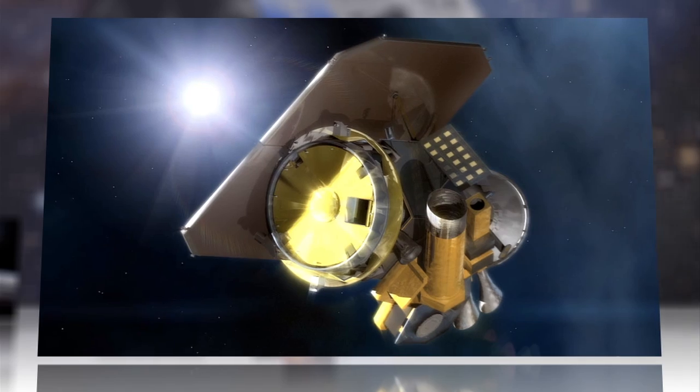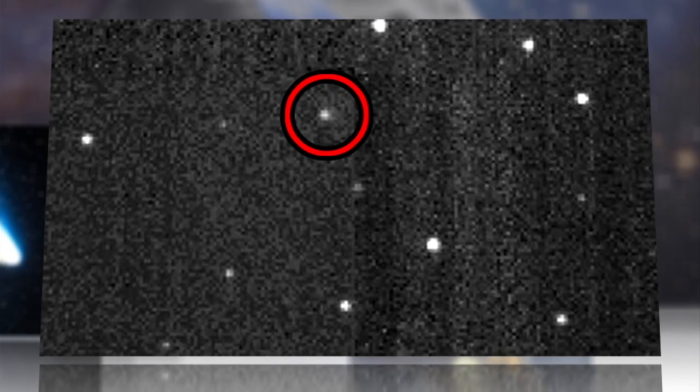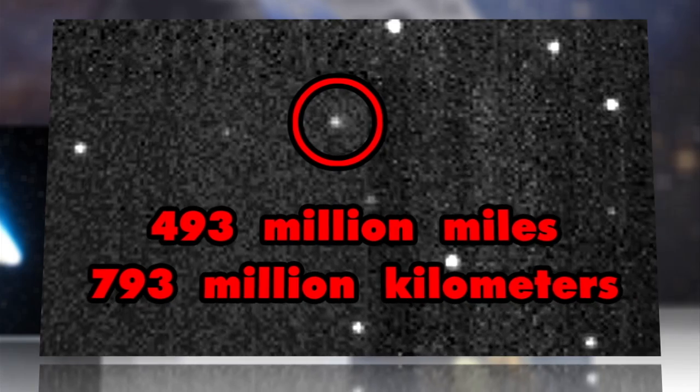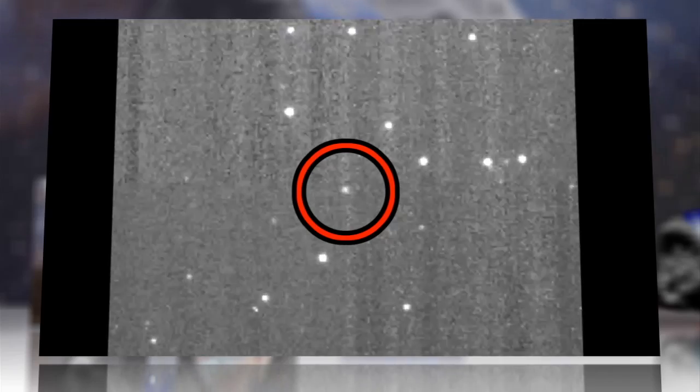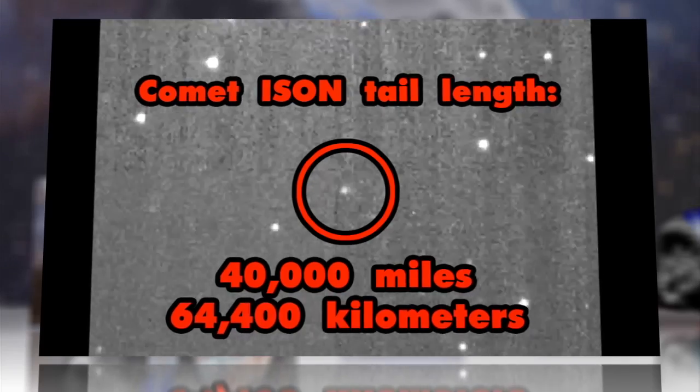NASA's Deep Impact Probe just snapped the first images of ISON from 493 million miles away. These distant images show the ancient body of ice and dust already boasts a 40,000-mile tail.